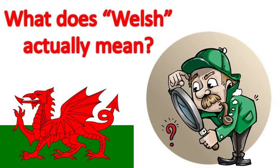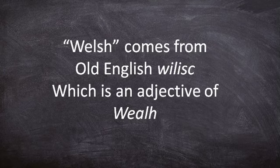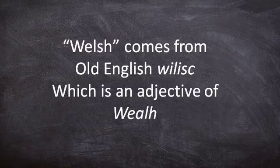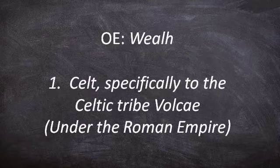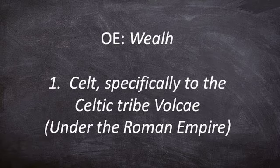What does Welsh actually mean? Well, let's find out. The word Welsh, as we know today, comes from the Old English word Wyllish, or a variant of Wyllish, which is itself an adjectival form of Waelh. The word Waelh in Old English has the proper meaning of Celt.